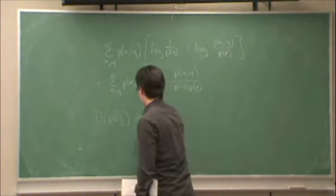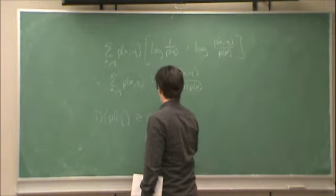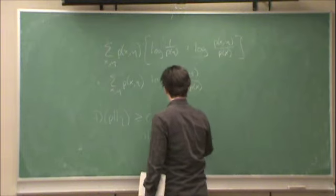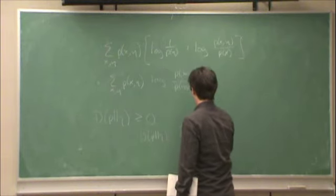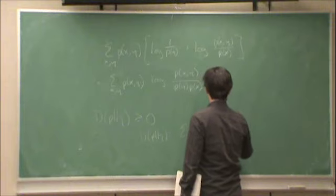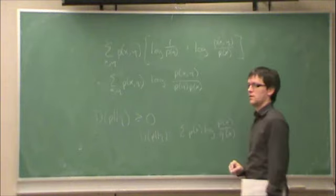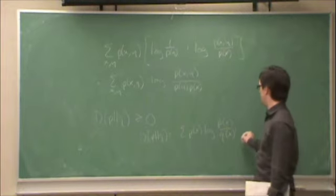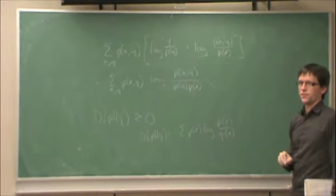So, what's DPQ? It's the sum over p log p over q. How do we get that into this form?